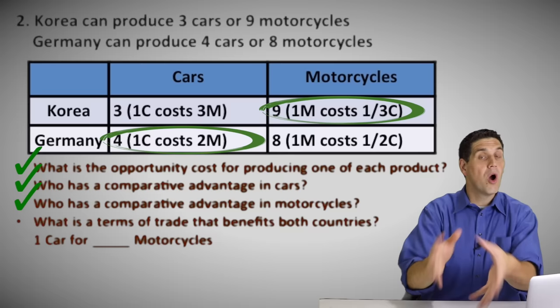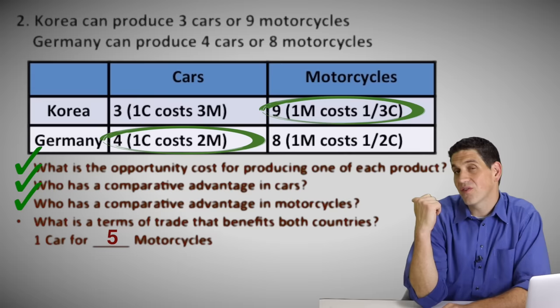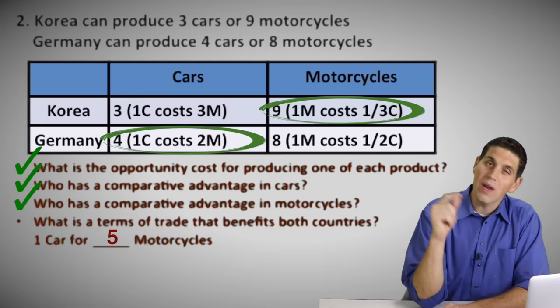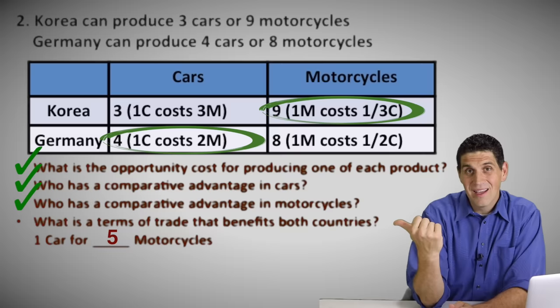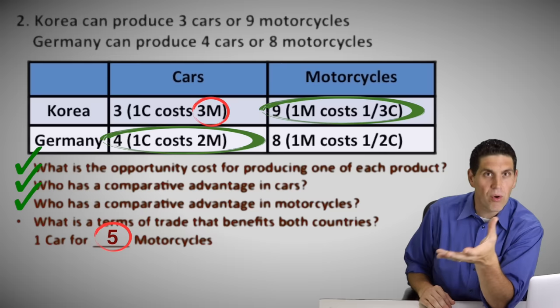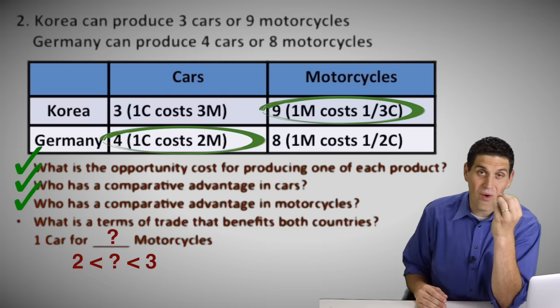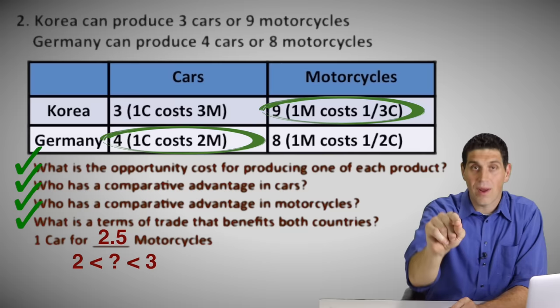Now what's the terms of trade? How many motorcycles traded for one car would benefit both countries? Five doesn't work — Korea is not going to trade five motorcycles for one car, because if they produce cars on their own it only costs them three motorcycles. Why trade five if you can make it yourself for three? So the number has to be less than three. And for Germany, the number has to be higher than two. So higher than two, less than three — two and a half. That's the right answer.